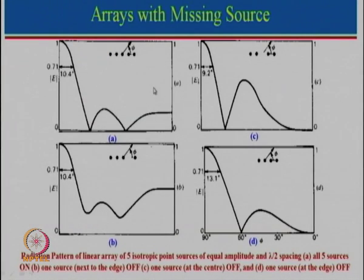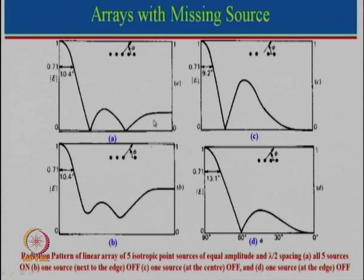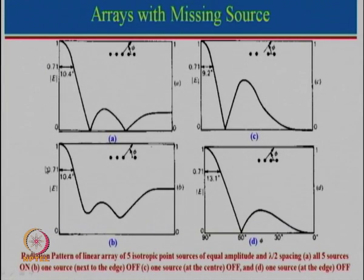Now let us see what happens when one element is missing. Here is the case when all 5 elements are fed with equal amplitude and equal phase, spaced at lambda by 2. The array factor is very similar to what we derived earlier, and for this case the beam is at 10.4 degrees. Instead of all 5 elements, if one element is not getting power, the array length still remains the same. One can see that the beam width remains almost the same, but the nulls have almost disappeared and there is a fairly high side radiation.